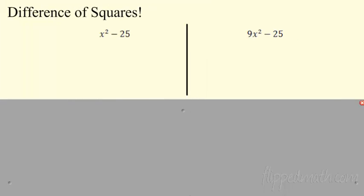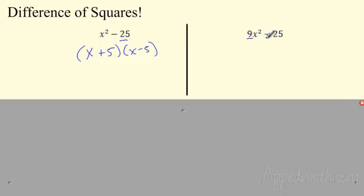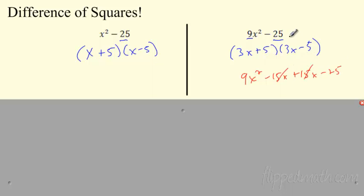Let's look at the special cases and then wrap up. Remember difference of squares from last time — that's when the middle term was 0. Because of the minus and the 25, you just know this breaks down into x plus 5 times x minus 5. What's that going to look like with a leading coefficient? You could do last times first, but you'll get really big numbers. If both terms are perfect squares, you can use the shortcut: 9x squared minus 25 is 3 times 3 and 5 times 5, so it factors as 3x plus 5 times 3x minus 5. Middle terms cancel when you multiply it back out.